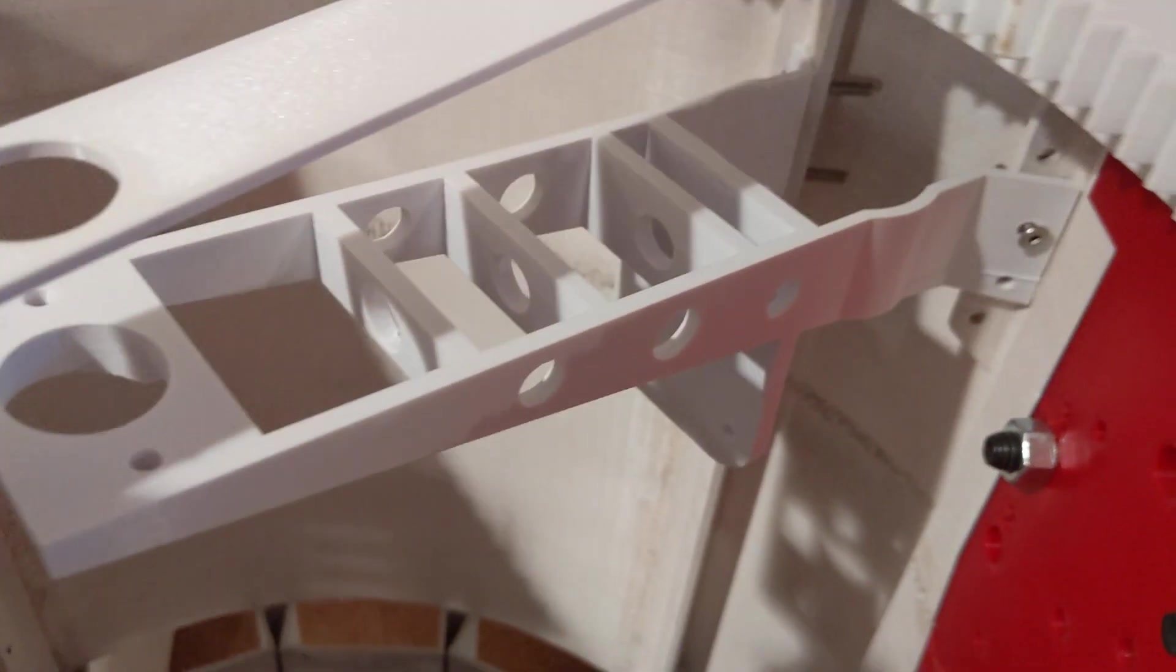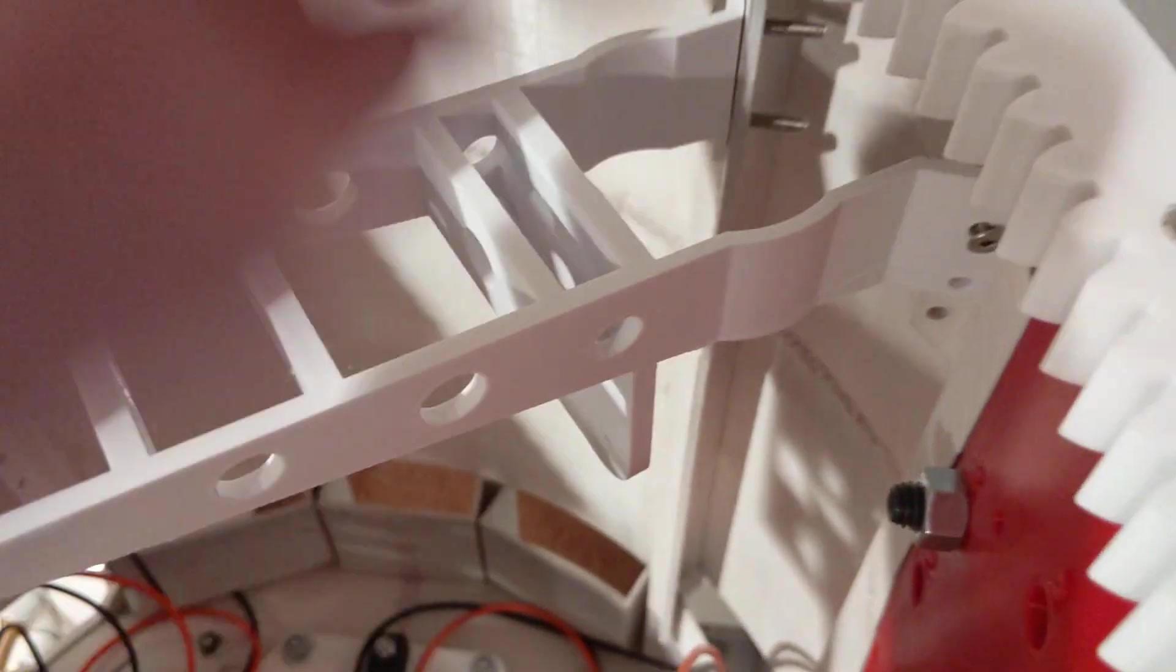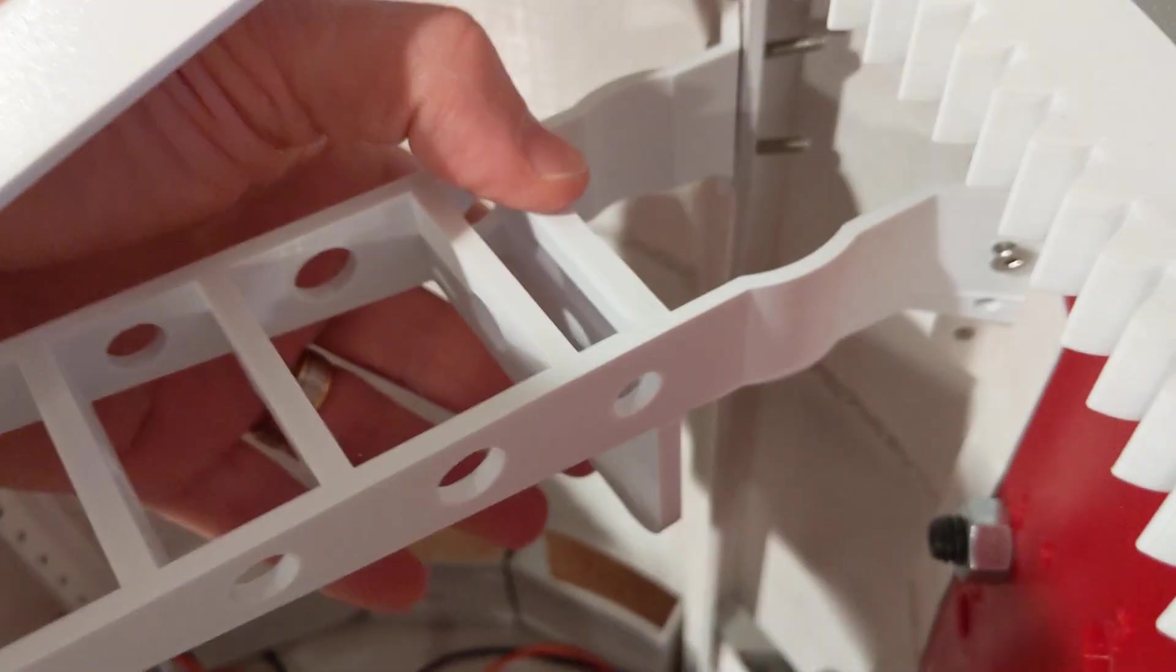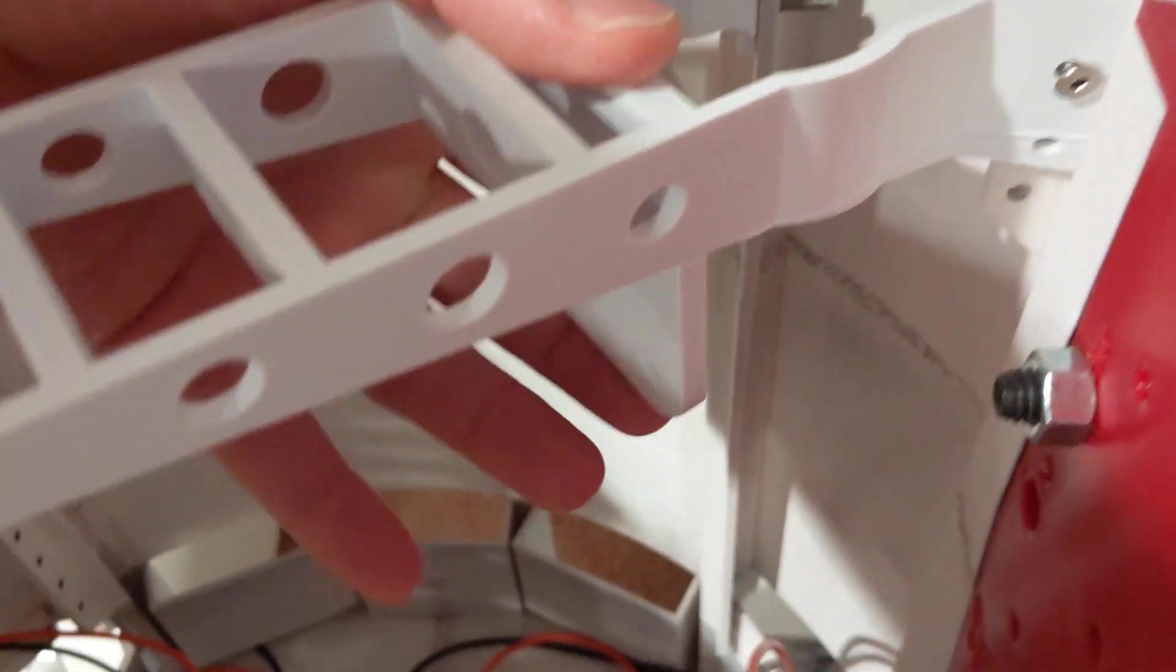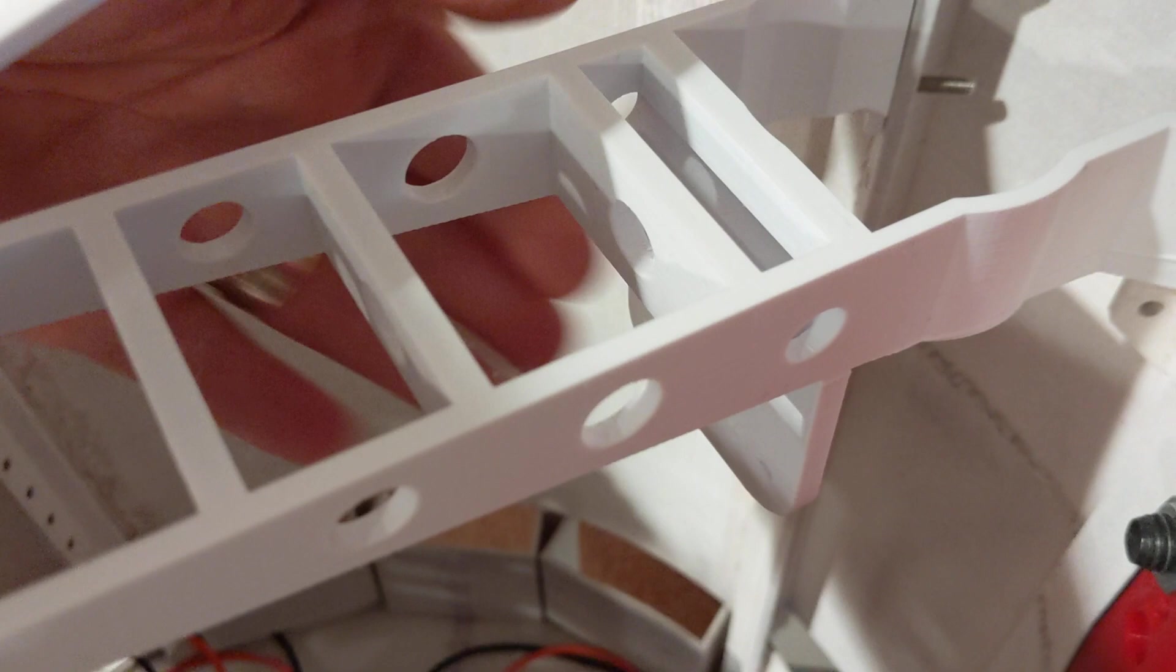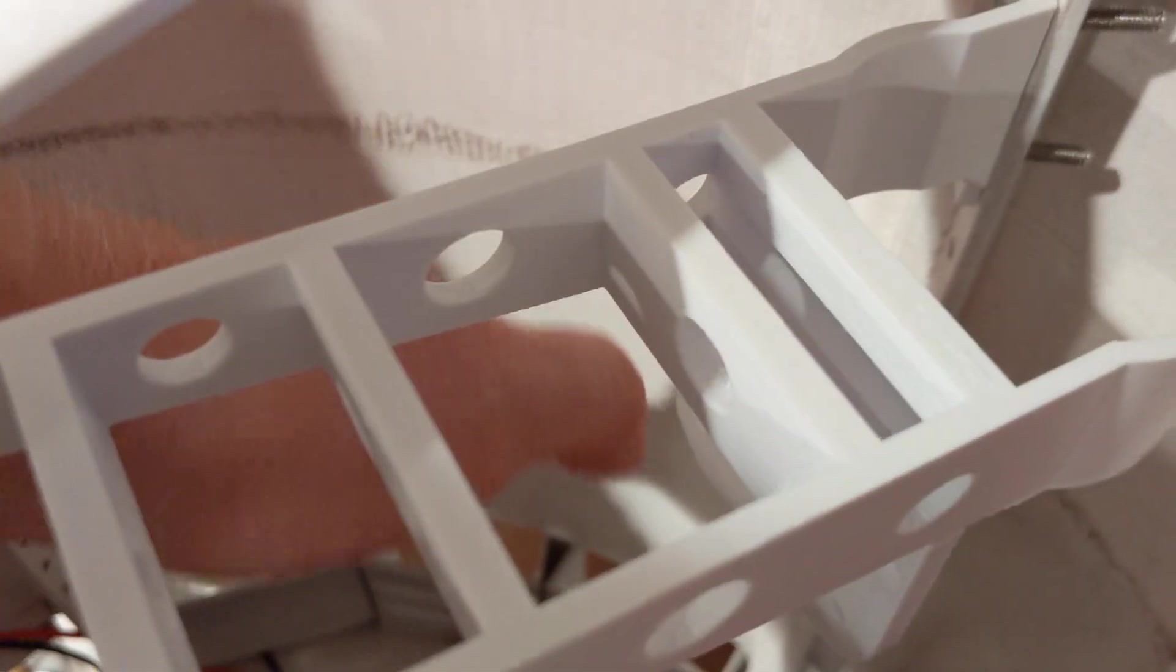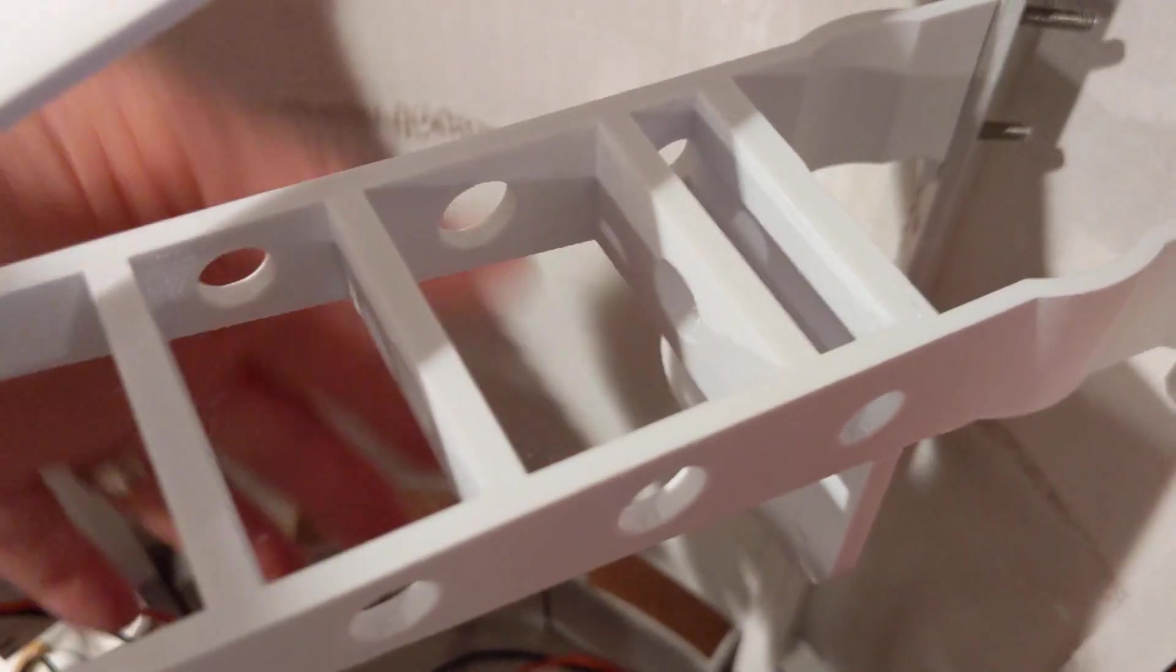In order for that electronics board to fold down, it has to clear this motor bracket, motor frame here. You can see this piece here that the motor bolts to, the dome motor, comes down quite far. So I had to make sure that my board, when it comes down, won't hit this, which it does not hit that. It's good.